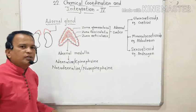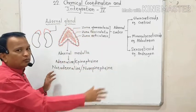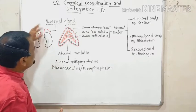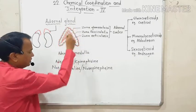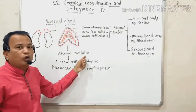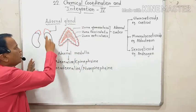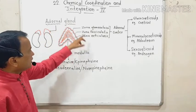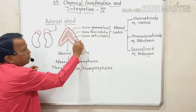The adrenal gland is actually dual in origin — its embryonal origin is dual. The outer part, the adrenal cortex, is of mesodermal origin, while the adrenal medulla is of ectodermal origin. So the adrenal gland has two distinct parts with different embryological origins.